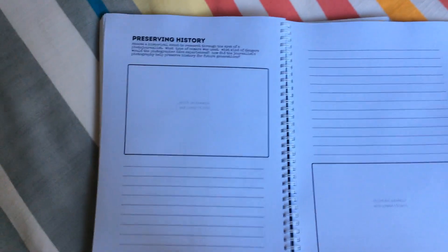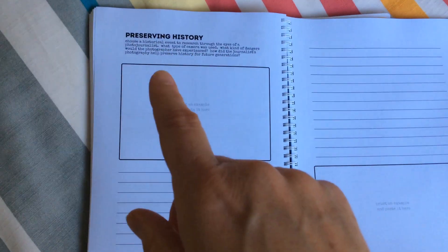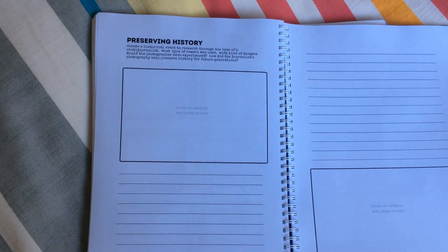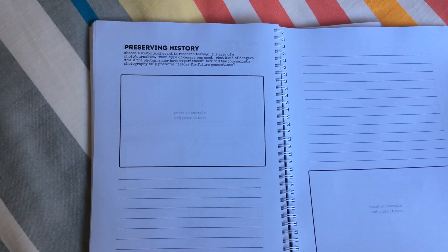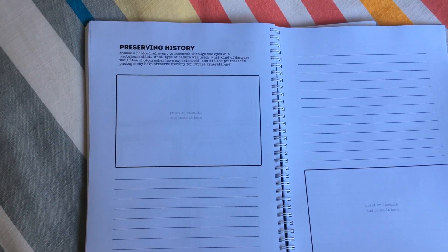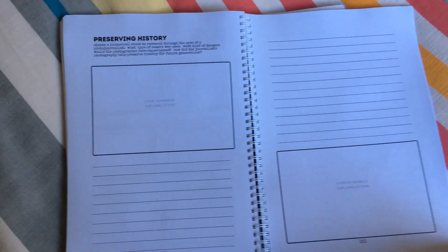So here's a project for them to do. Preserving history. Choose a historical event to research through the eyes of a photojournalist. What type of camera was used? What kind of dangers would the photographer have experienced? How did the journalist photography help preserve history for future generations?